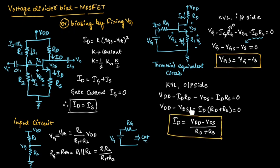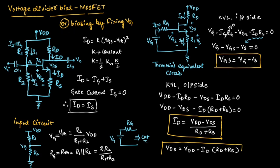From this equation, we can find the expression for Vds, which is the output voltage. So we can write Vds is equal to Vdd minus Id into (Rd plus Rs). This is the expression for Vds. This is about voltage divider biasing using MOSFET. Hope you have understood the topic. Thank you.